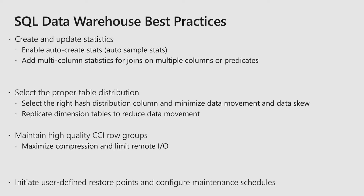The second best practice is around selecting a proper table distribution. SQL Data Warehouse has a massively parallel processing architecture where the data is distributed across multiple distributions, and the table distribution specifies how that data is laid out across your data warehouse. When you think about your workload, your data, and the queries you're executing, you want to choose the proper table distribution to minimize data movement and reduce data skew. We also announced replicated tables a few months ago, so if you have dimension tables in your data warehouse or data model, make sure you replicate those tables to reduce data movement and shuffle movements.